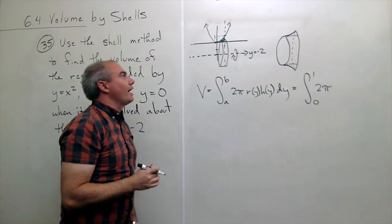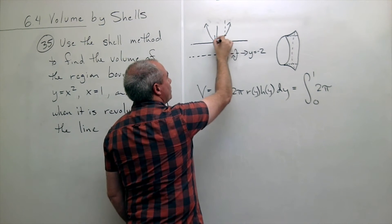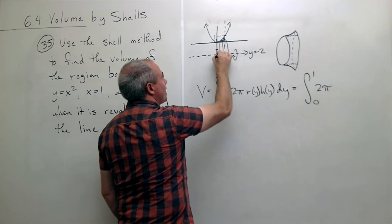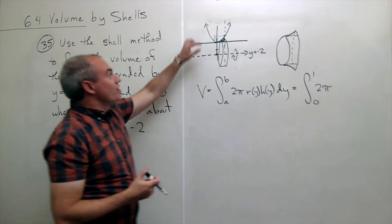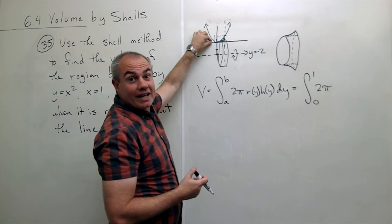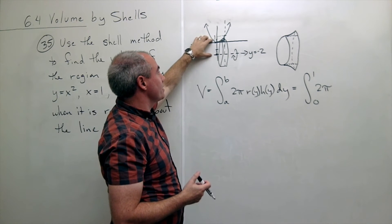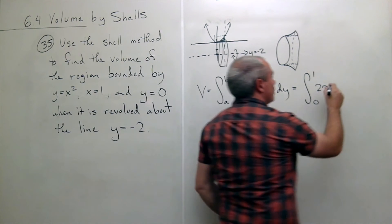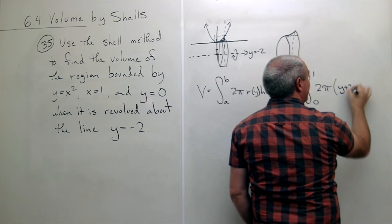Now we need r of y and that's where I need to be a little bit careful. If I'm at a typical point y, how far am I from the center of the shell? Well it's not y, because y just gets me back to the axis. Y is this distance, I want this distance. So it's y plus an additional two. The radius is not going to be y anymore, it's y plus two.